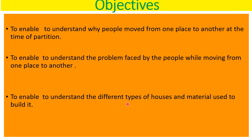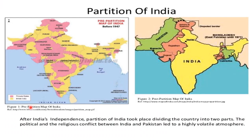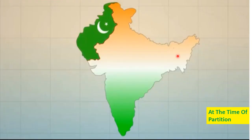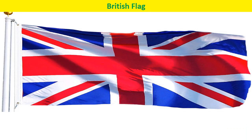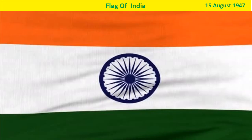Another objective is to understand the different types of houses and materials used to build them. As you can see on India's map, before independence Pakistan was not a separate country — it was part of India. After partition, India was divided into two countries: Pakistan and India. When the British left, we got independence on 15th August 1947.